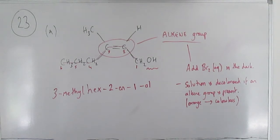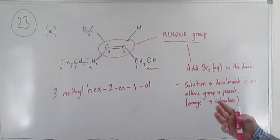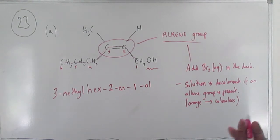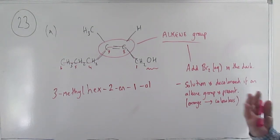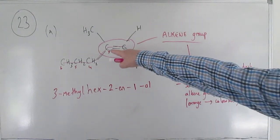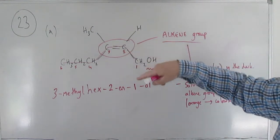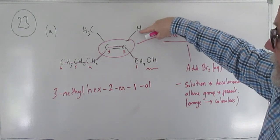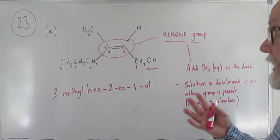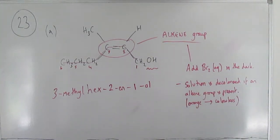As always with alkenes, you've also got to consider the possibility of EZ isomerism, because if you do have EZ isomers those would be two different compounds and the name must specify which one it is. We look at the two carbons of the double bond and ask for each one: does it have two different groups attached? Is hydrogen different from CH2OH? Obviously yes. Is methyl different from propyl? Obviously yes. So this can have EZ isomers.